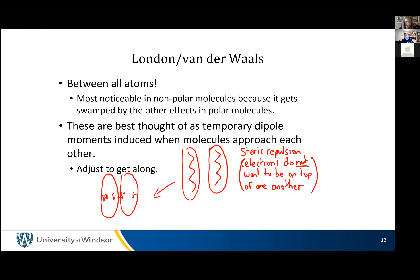You notice London dispersion forces most in non-polar molecules because they get swamped by the permanent dipoles in polar molecules — those big giant dipoles snap things together like Lego pieces. For London dispersion forces, there's no set geometry for how things interact, but generally the bigger the interacting surface, the stronger the force.